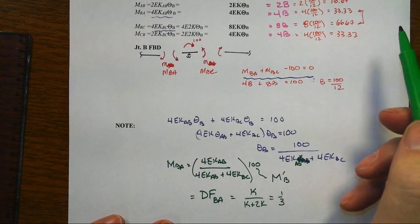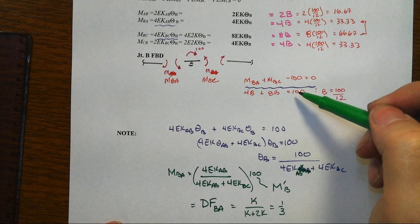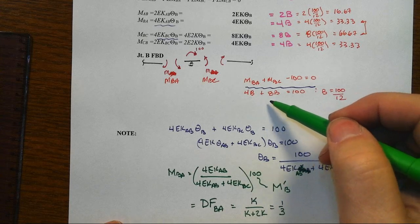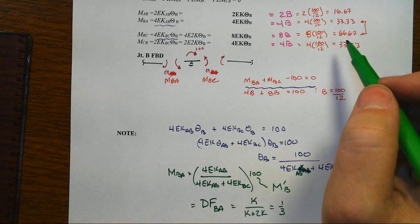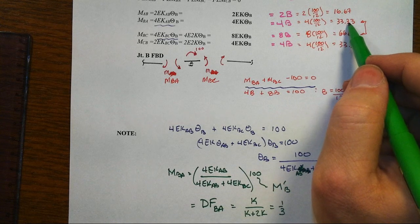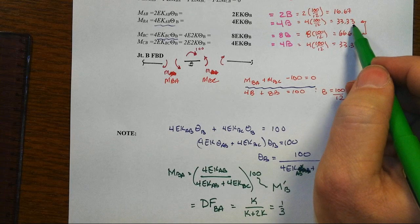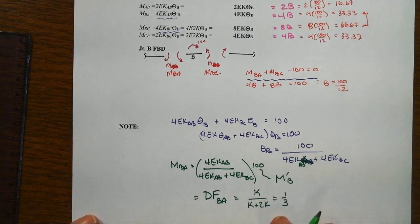So if we had, up here, that that total moment of 100 got split in a ratio, in this case 4 to 8, 1 to 2, that we had 1 third of that moment, that unbalanced moment, went to one member and 2 thirds, the rest of it went to the other member.